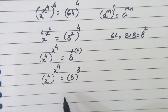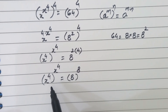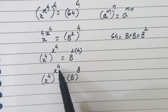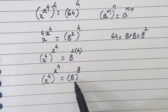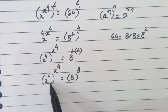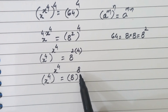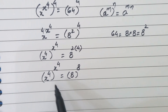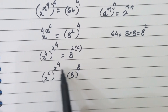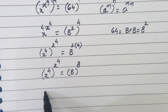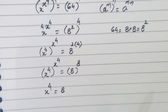Now we see that here the base and exponents are the same. On the left hand side, the base is s to the power 4 and the exponent is s to the power 4. On the right hand side also, the base and exponents are equal. So we can put x to the power 4 is equal to 8.